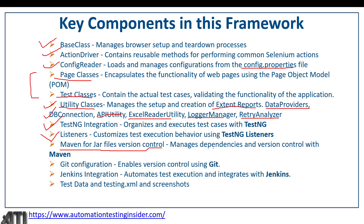Another important component is TestNG integration — to organize and execute test cases. We'll use Listeners to customize test execution behavior, such as handling pass, fail, or skip events. Maven is used to download all jar files required in the framework. Git and GitHub are used for version control and remote repository, and Jenkins integration automates test execution. Test data, TestNG XML, and screenshots are also part of the framework setup.